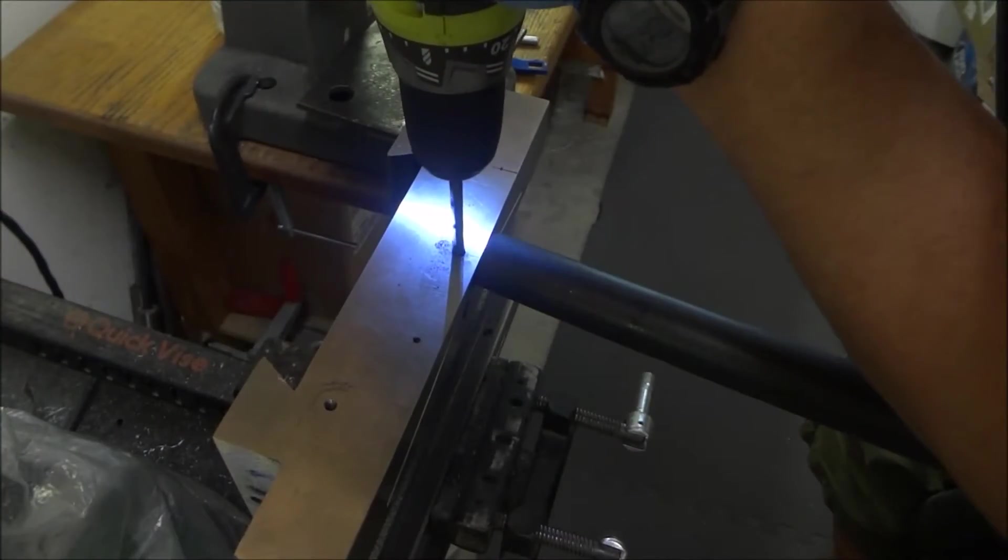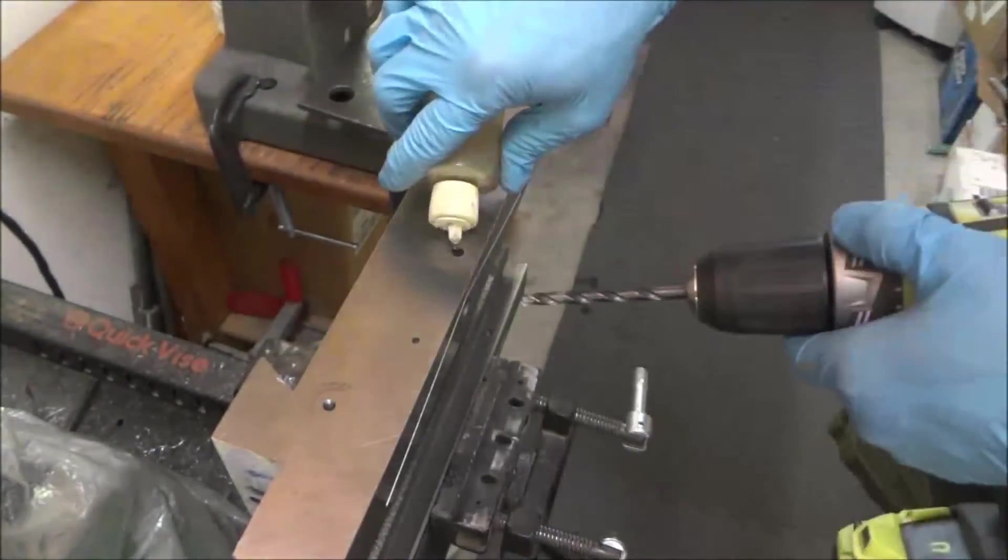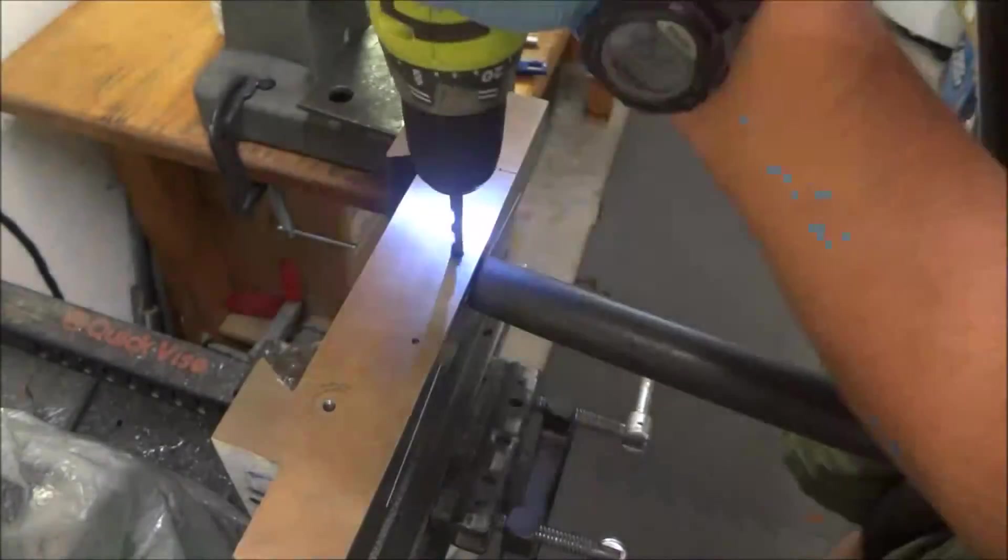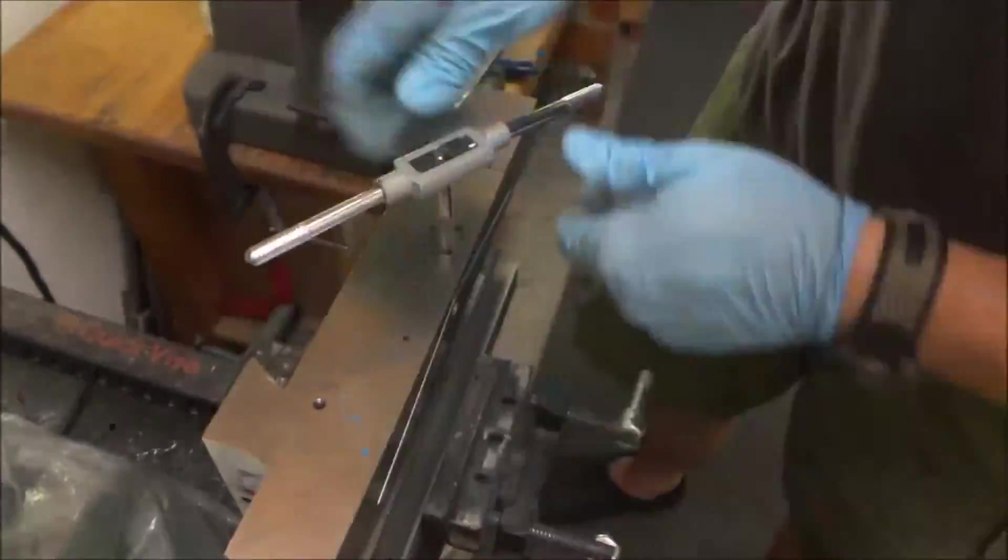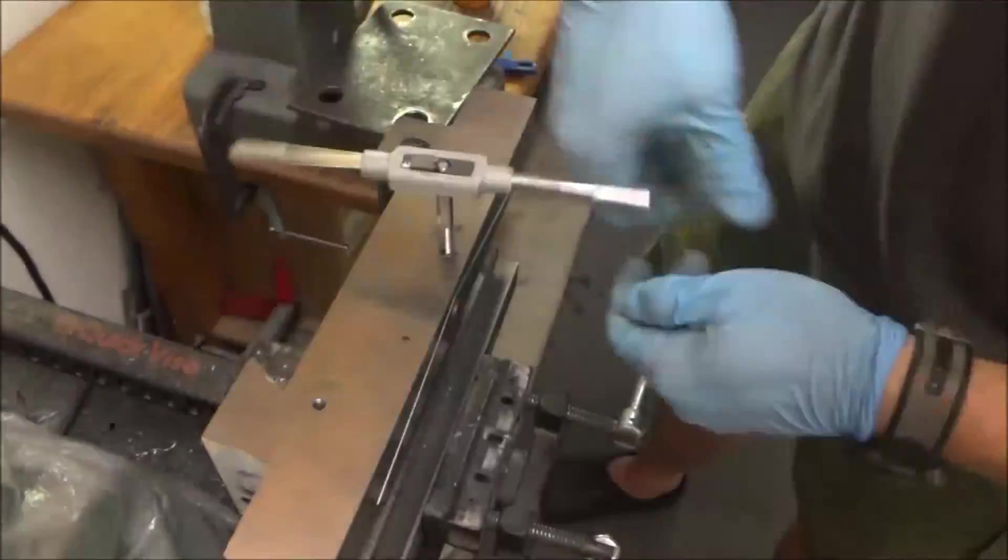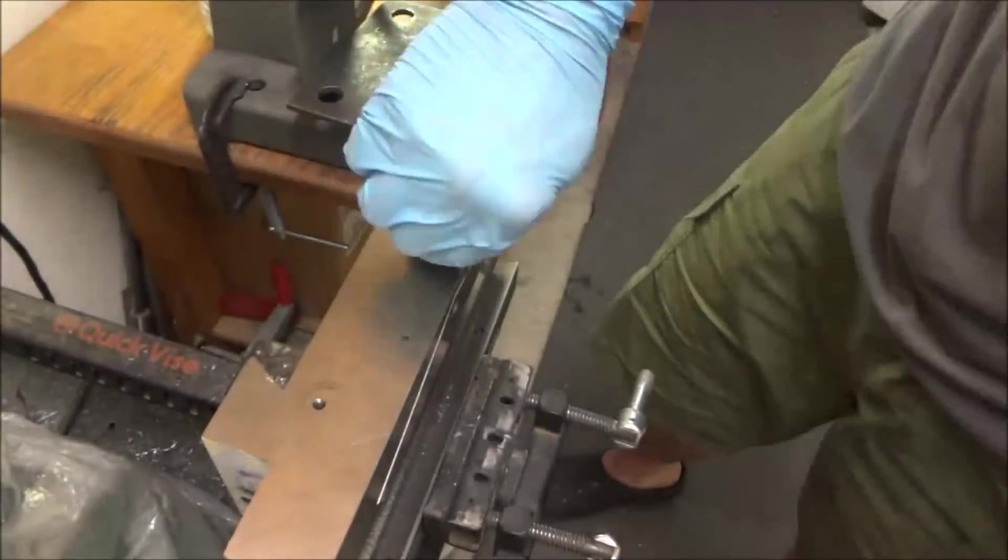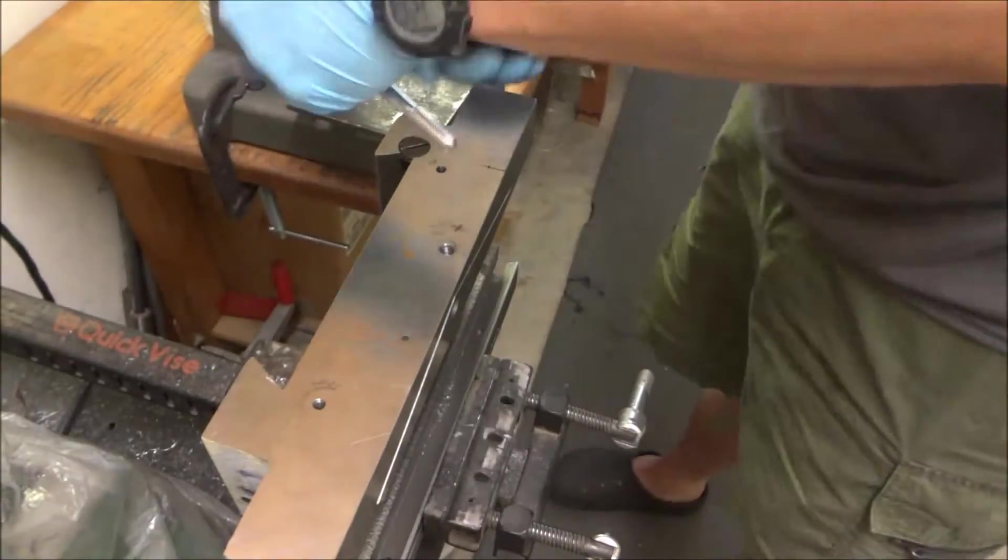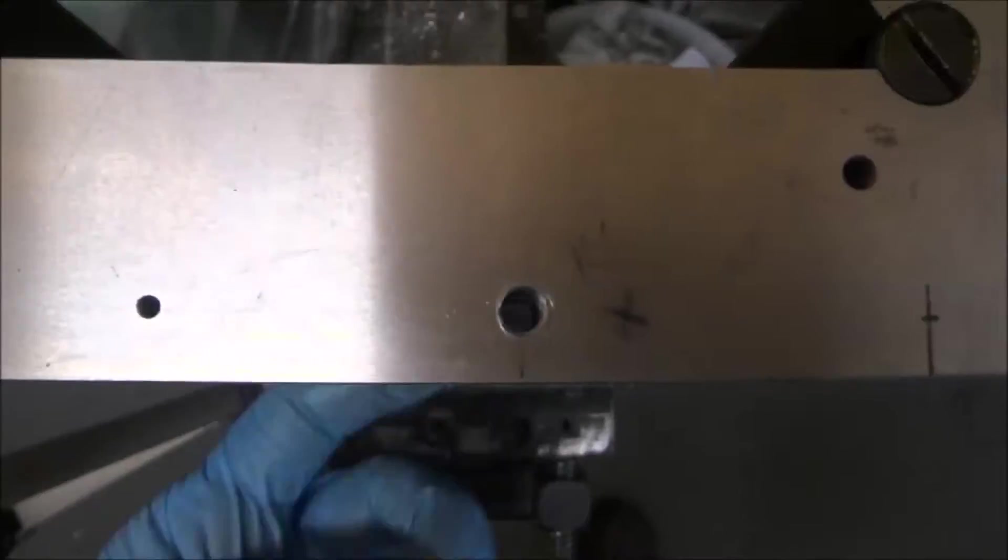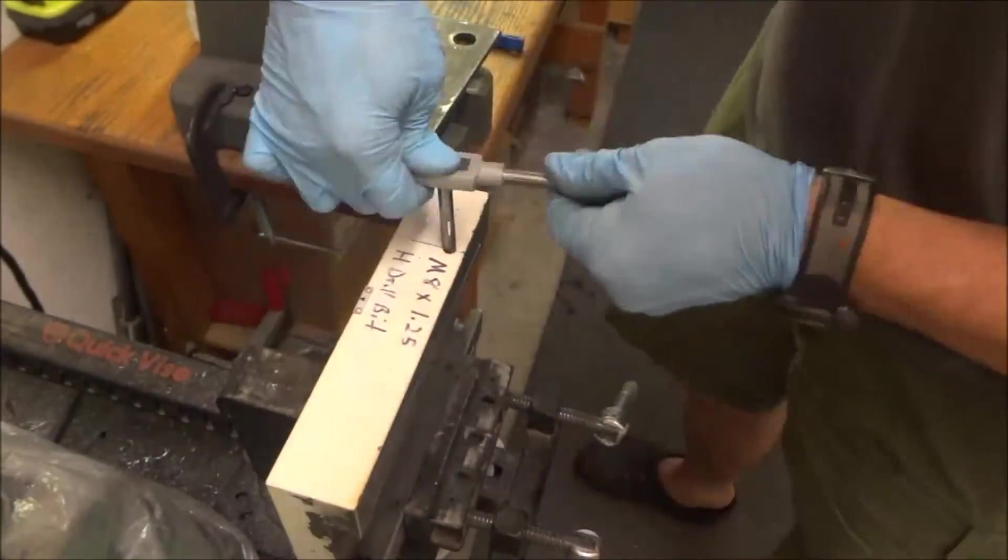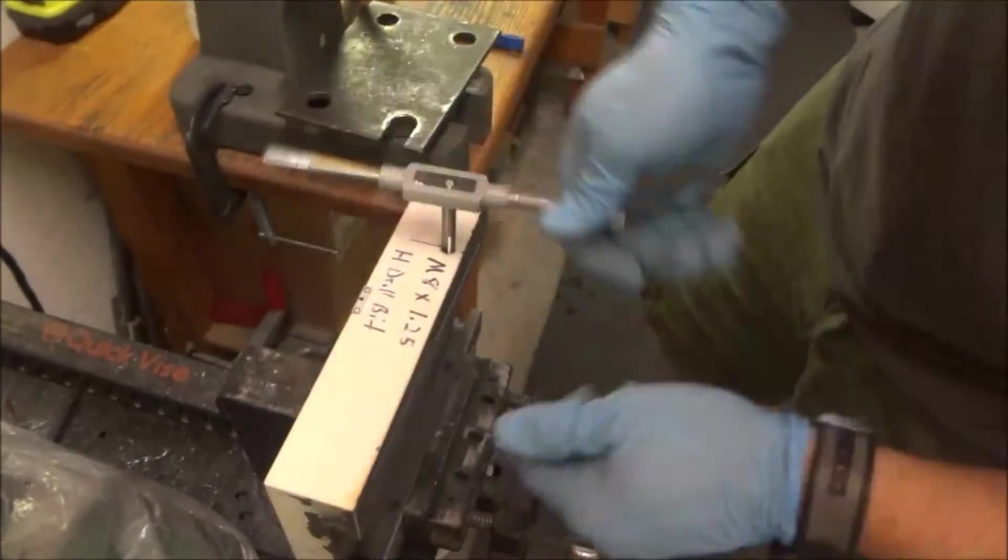I'm drilling through the back here - this is to get the back side of the X. Tapping it again, this is m8 by 1.25. The casting is pretty coarse so most of this drilling and tapping goes fairly easily. You can see the hole there going through, and again tapping m8 by 1.25.